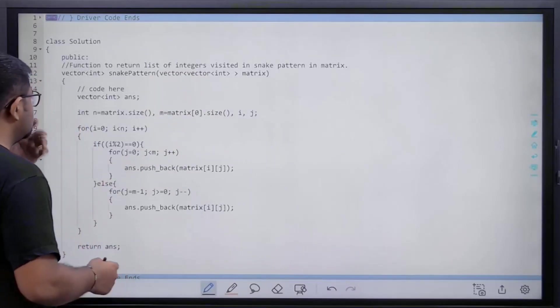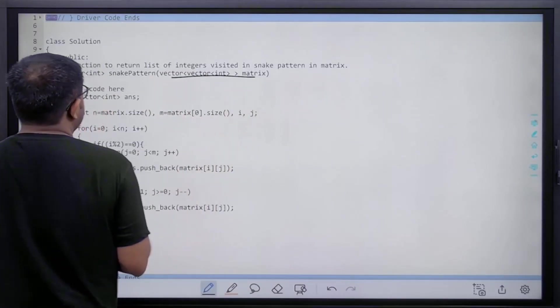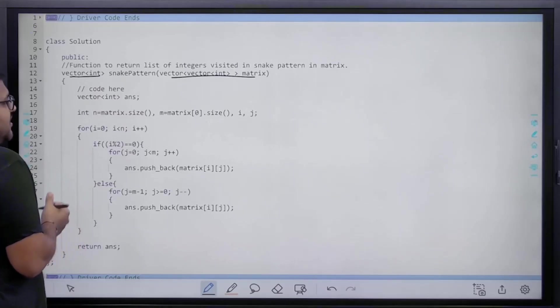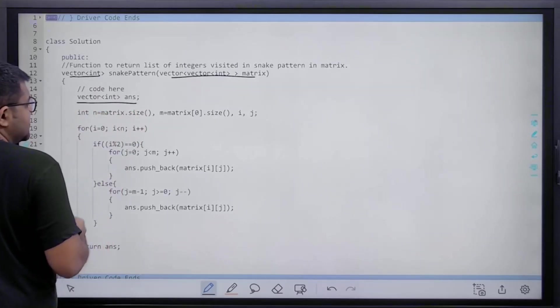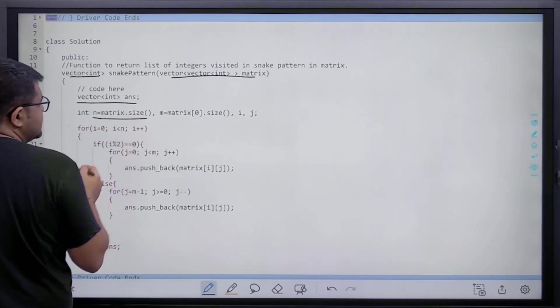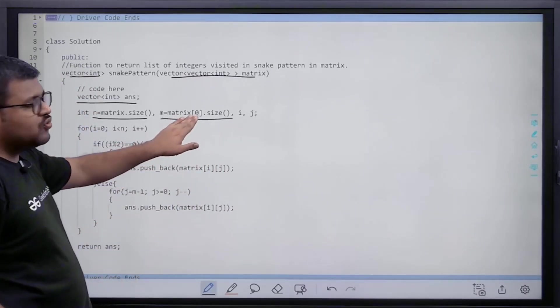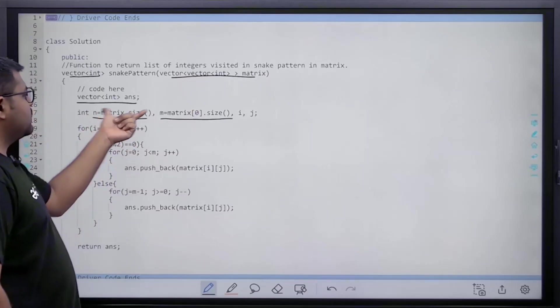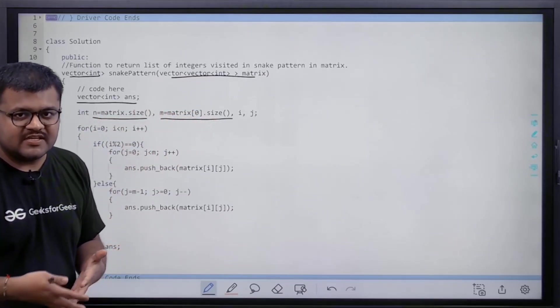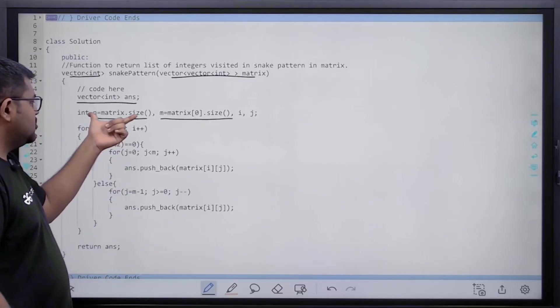If we look at the actual code, this is the matrix which is given to us and we need to return a list of values in the snake pattern. I have taken one vector answer, then I have taken n as the matrix size and m as the matrix[0].size. But here this is not needed. Even if you do not take this, n is the number of rows and m is the number of columns. But since the matrix is of size n cross n, you can only take this also.